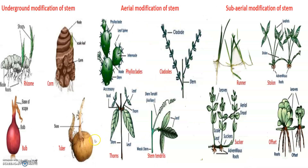Modifications of the stem. The stem may not always be typical and may be modified to perform different functions. Underground stems of potato, ginger and turmeric — and also jimikand and colocasia — are modified to store food in them. They also act as organs of perennation to tide over unfavorable conditions for growth.